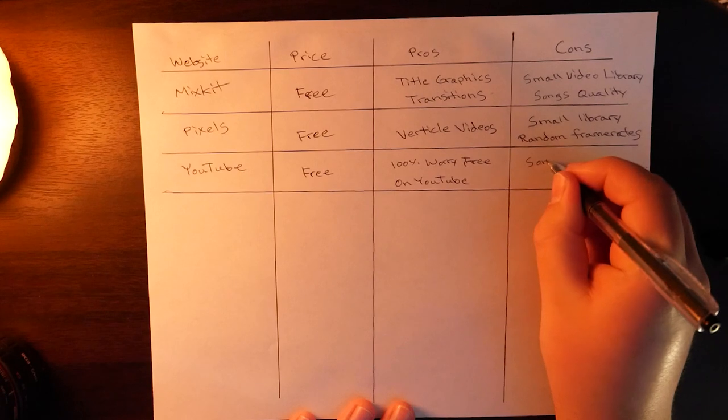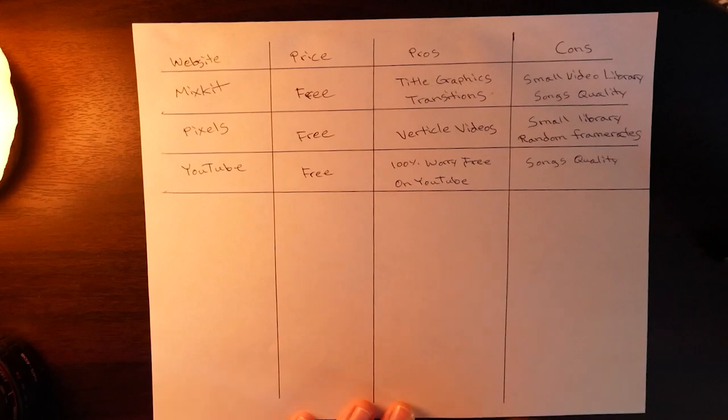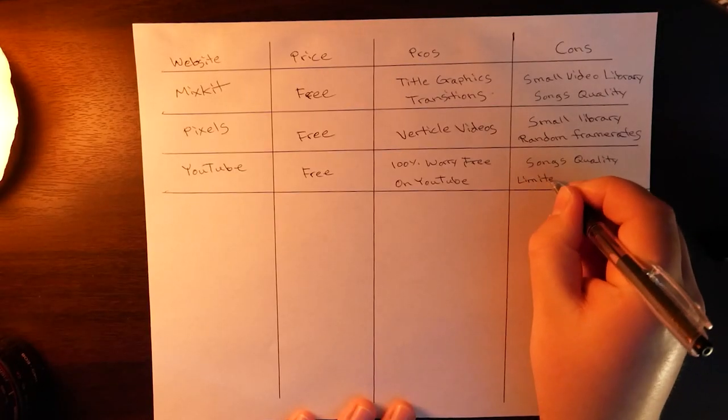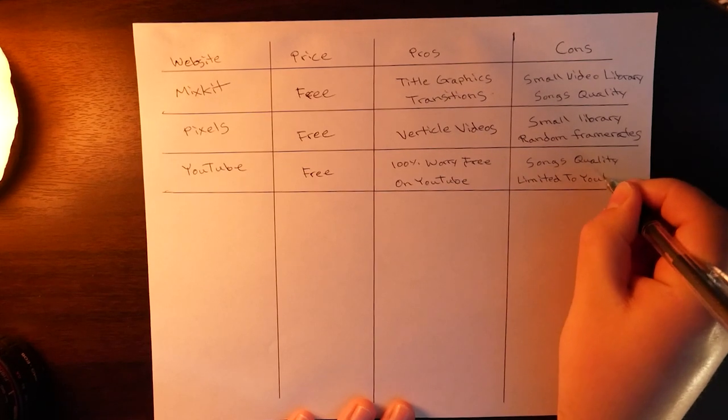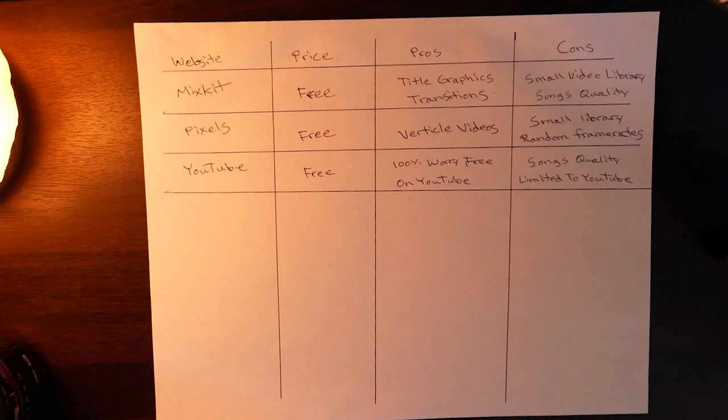Now let's talk about some of the downsides. Obviously the quality isn't going to be as great as if you bought a dedicated music license from a website such as Artlist, which we will be getting into later. But outside of the quality, the other thing you want to keep in mind when using YouTube's audio library is that you're limited to the platform. From personal experience I've used some songs on Instagram or Facebook and they have gotten flagged saying you can't use it on that platform. This may or may not happen to you depending on the video project and the platforms you're using.